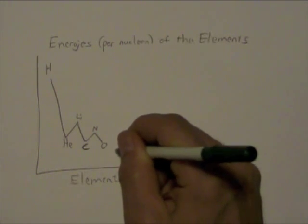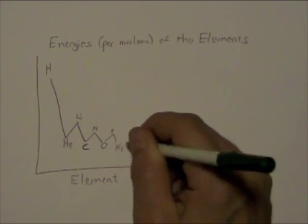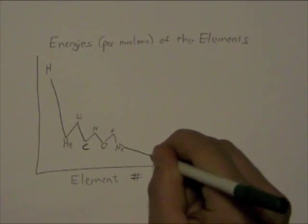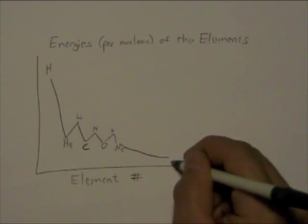And neon is a little bit more downhill than oxygen. And there's a little bit of an uphill in between, which is fluorine. And after neon, it sort of starts to make a nice smooth curve downhill. You can make all kinds of stuff and get a little bit of energy out of each step until you get to the bottom of the hill, which is iron.